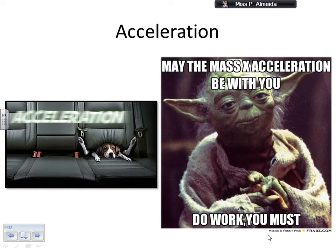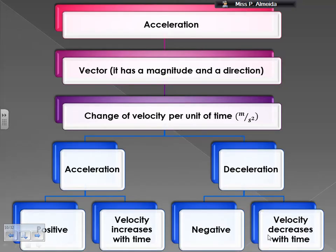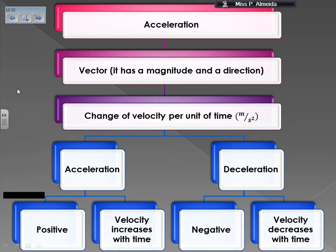Acceleration is a vector, meaning that it has a magnitude and a direction. So it has a number, and I can have a positive or negative acceleration. Acceleration, by definition, is the change of velocity per unit of time, and it comes with units of meters per second squared.